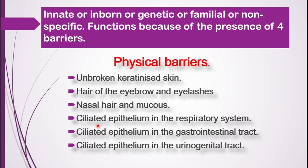The next physical barrier is the ciliated epithelium lining the respiratory system — the trachea, bronchi, and bronchioles. In case some microbes escape the nasal hair, the ciliated epithelium can trap them and prevent infection. Similarly, ciliated epithelium is also present in the gastrointestinal tract and the urinogenital tract, all acting as physical barriers.